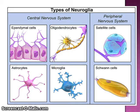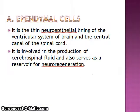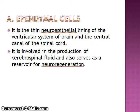Oligodendrocytes are also useful for conduction; we will study them in detail later. Ependymal cells: they form the thin neuroepithelial lining of the ventricular system of the brain and the central canal of the spinal cord. They are involved in the production of cerebrospinal fluid and also serve as a reservoir for neuroregeneration.